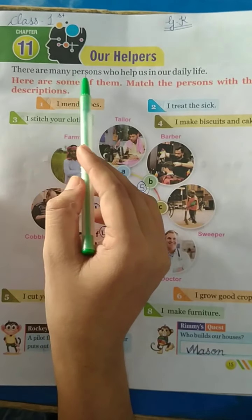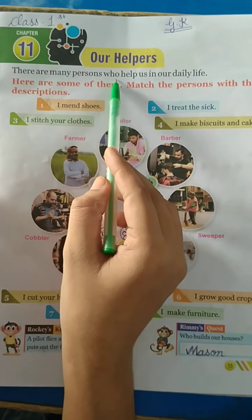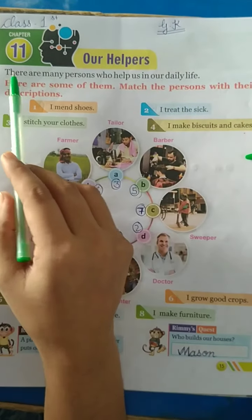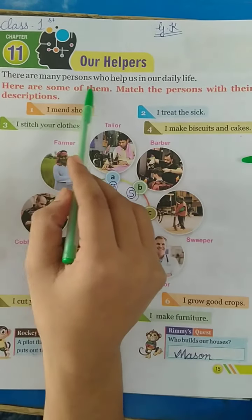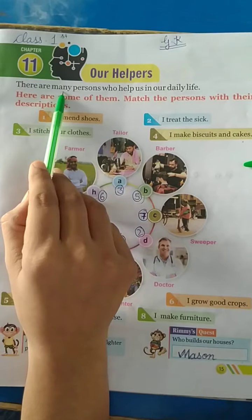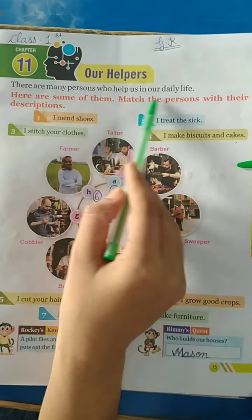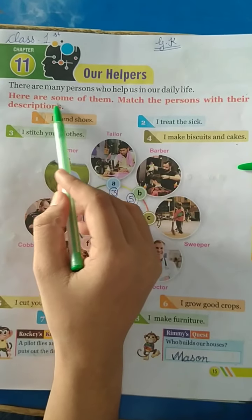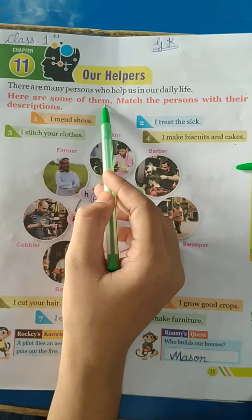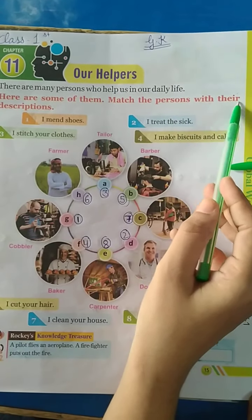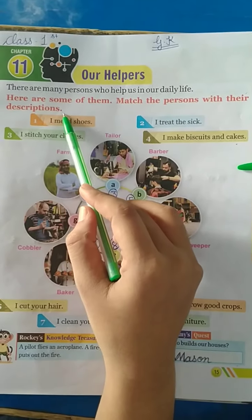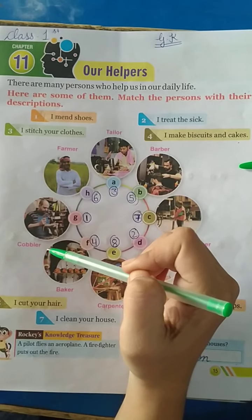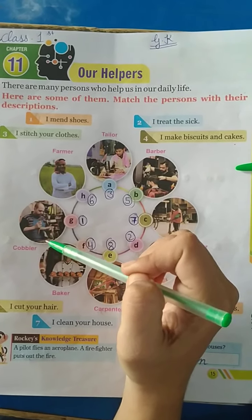There are many persons who help us in our daily life. Aise bohot se loog hain joo humari daily life mein humari help karte hain. Here are some of them. Match the persons with their description. Yahan persons diye hain, unko unke work se aapko match karna hain ki woh kya karte hain.